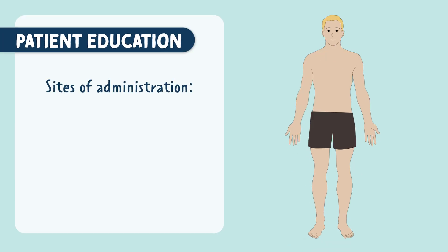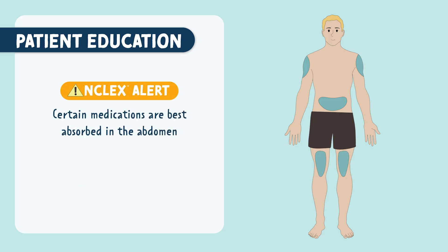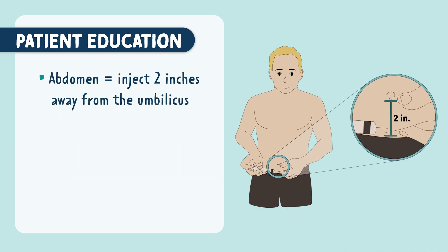Let's dive into some patient education. Common sites for subcutaneous injections are the abdomen, the posterior or back of the upper arm, and the thigh. Certain medications are best absorbed in the abdomen — these include anticoagulant therapies like enoxaparin, trade name Lovenox, or heparin. When injecting into the abdomen, be sure to inject about 2 inches away from the umbilicus.